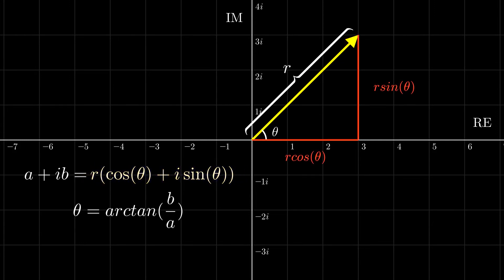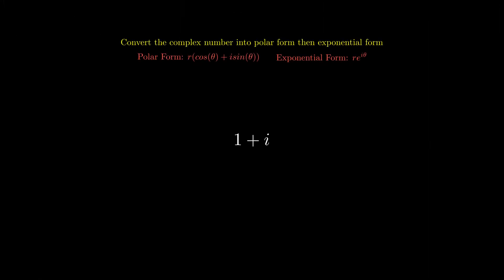This is called polar form. There is also one other form, which is r e to the power of iθ. This form is exponential form. Pause the video now and try to convert the complex number 1 plus i into polar form, then into exponential form.